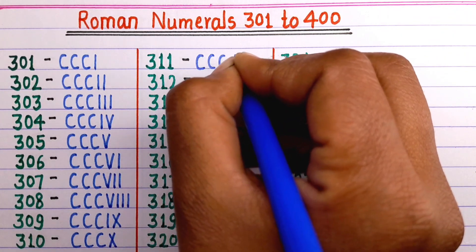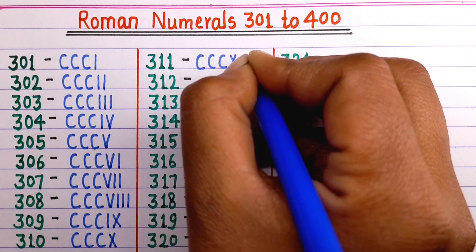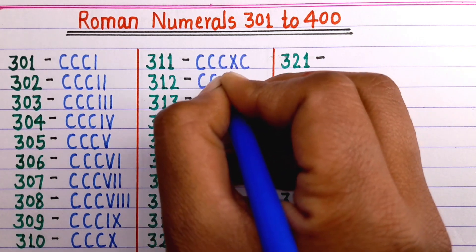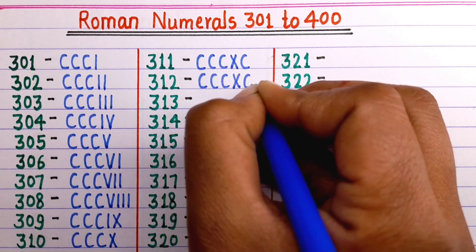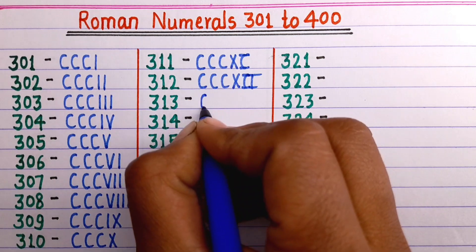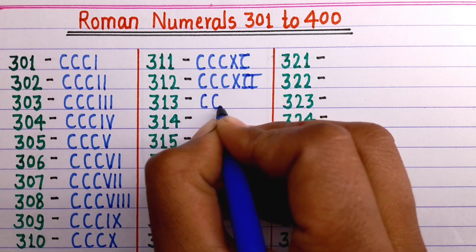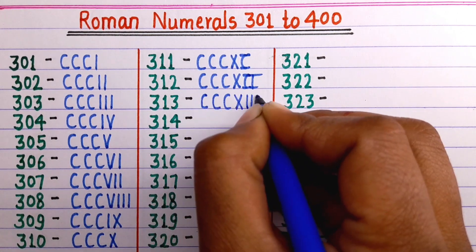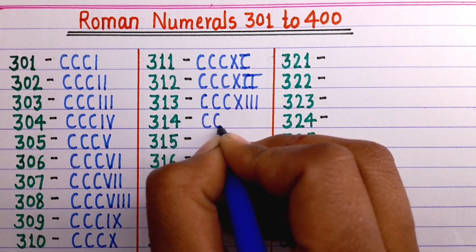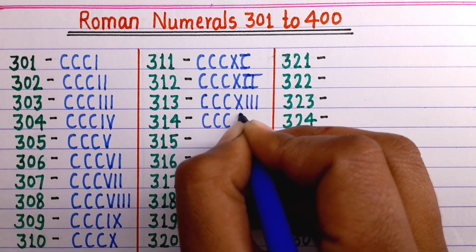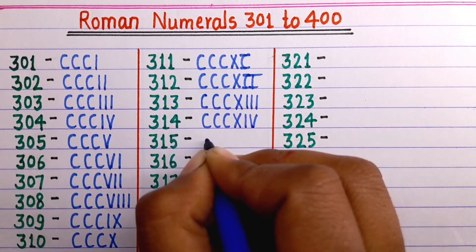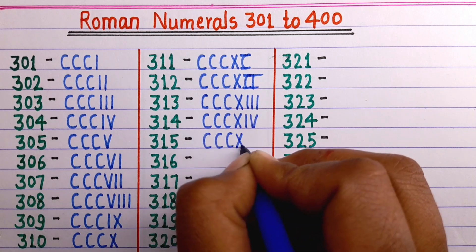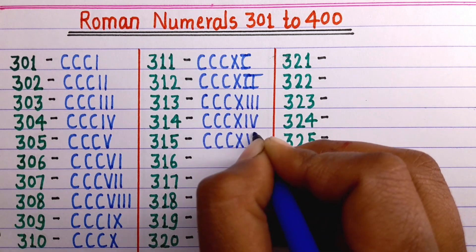311 is CCCXI. 312 is CCCXII. 313 is CCCXIII. 314 is CCCXIV. 315 is CCCXV.